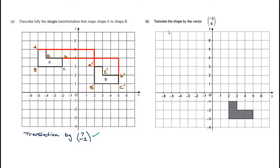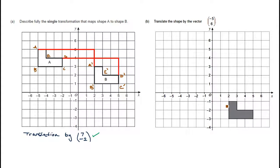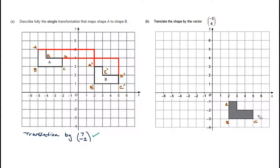Let's move on to part B. In part B, we have to translate the shape by the vector minus five, six. Again, we can label up our object to give us a key that we're working from. So once again we'll have A, B, C, D, E.